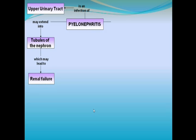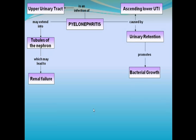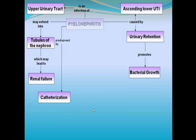Commonly, pyelonephritis is caused by urinary retention or an ascending lower UTI. Retained urine provides a breeding ground for bacteria. In addition, the presence of catheters or fecal incontinence increases the potential for UTI.